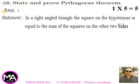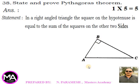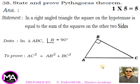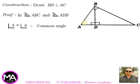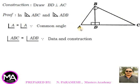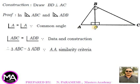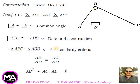38th question — State and prove Pythagoras theorem. Statement: In a right-angled triangle, the square on the hypotenuse is equal to the sum of squares on the other two sides. Given: In triangle ABC, angle B = 90°. To prove: AC² = AB² + BC². Construction: Draw BD perpendicular to AC. Proof: In triangles ABC and ADB, angle A = angle A (common), angle ABC = angle ADB (from data and construction), therefore triangle ABC ~ triangle ADB by AA similarity.